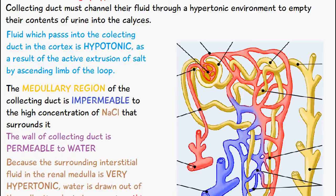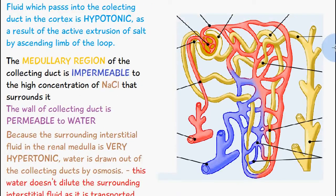The medullary region of the collecting duct is going to be impermeable to this high concentration of sodium chloride, but the actual entire wall of the collecting duct is permeable to water, which means that if we're in a state of dehydration the body is able to retain water by allowing the water to be transported out of the collecting duct via water channel proteins.